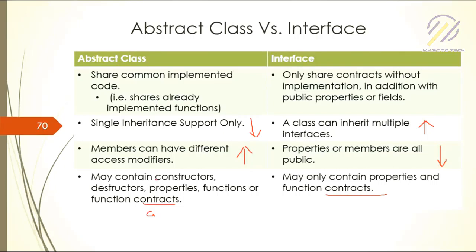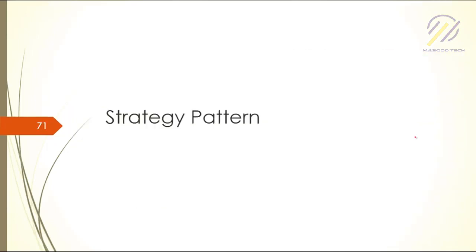Interfaces may only contain properties and function contracts, that's it, nothing more. But abstract classes can also hold implementation of functions rather than just the contracts. These are the upsides and downsides.